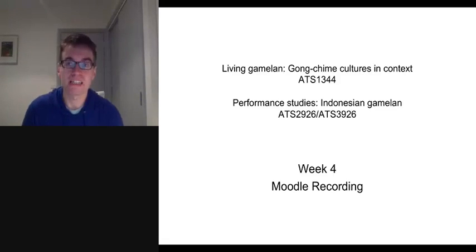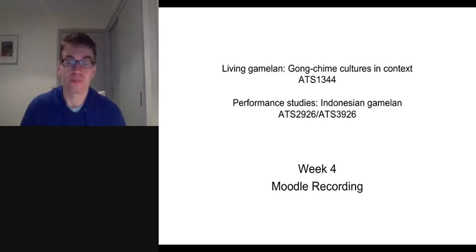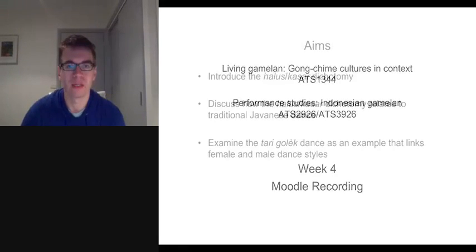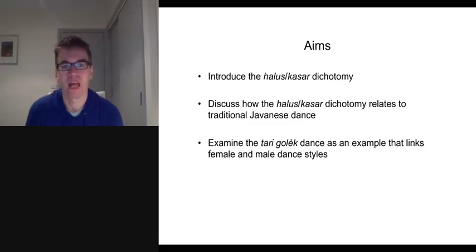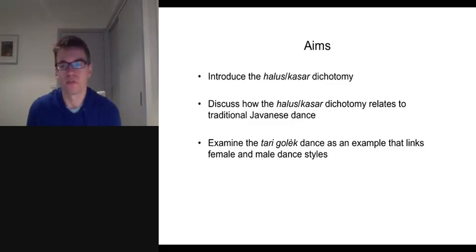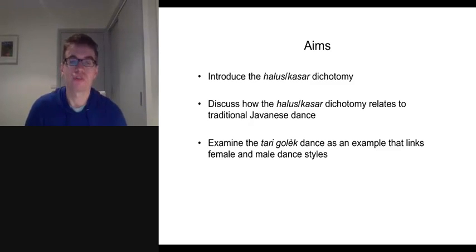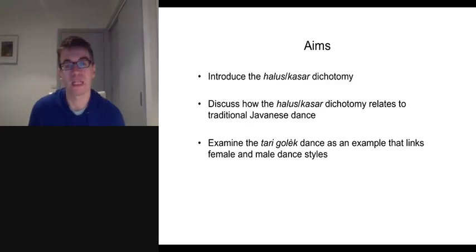Hello there, my name is Jonathan McIntosh and in this video I would like to talk to you about aesthetics associated with the Japanese performing arts, and in particular the aesthetics associated with Japanese dance performance. The aims of this video are to discuss an important aesthetic dichotomy that exists in Java — the Alus-Kasar dichotomy — and how it relates to traditional Japanese dance, as well as discussing it in relation to everyday Japanese life, and how one particular dance known as Tarengolek, which is a female dance, links male and female dance styles and aesthetics in performance.